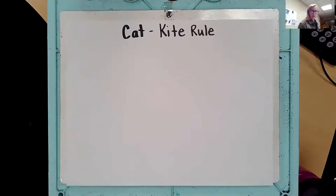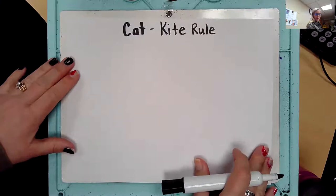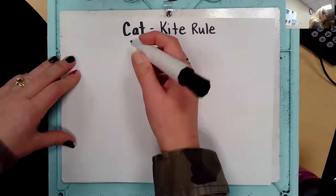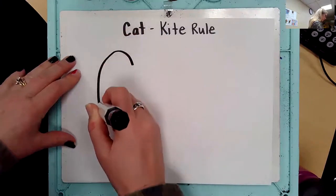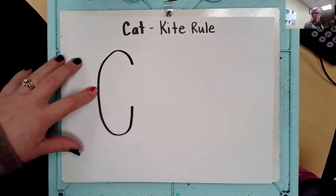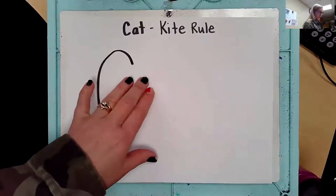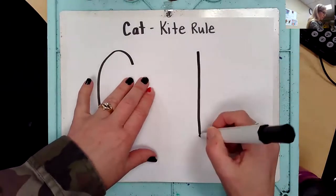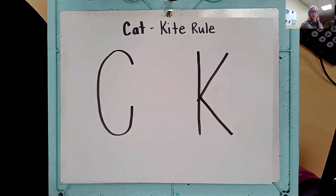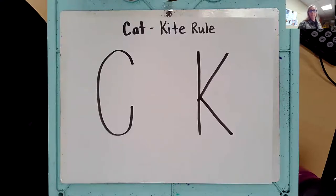I grabbed my black marker to start with. So I want you to write the letter C nice and big on your paper. So we have the letter C over here, and over on the other side I want you to write the letter K nice and big. If you have capitals on both of those, that's awesome — we want them nice and big on our paper. So the question is: how do I know if it's a C or a K?